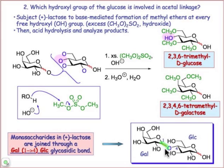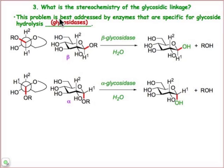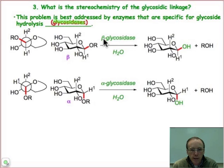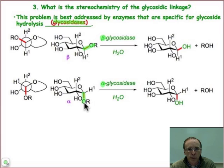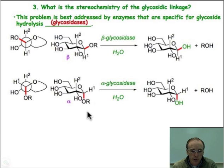What we don't know yet is the stereochemistry — is that α or is it β? The way we'll determine this is by subjecting that disaccharide to a glycosidase that's specific to the stereochemistry at the C1 position. β-glycosidase will only hydrolyze β-glycoside bonds, whereas α-glycosidase will only hydrolyze α-glycoside bonds.